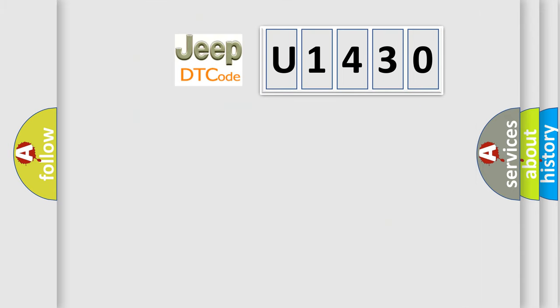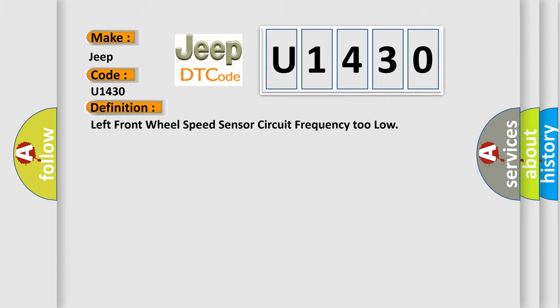So, what does the diagnostic trouble code U1430 interpret specifically for Jeep car manufacturers? The basic definition is: Left front wheel speed sensor circuit frequency too low. And now this is a short description of this DTC code.